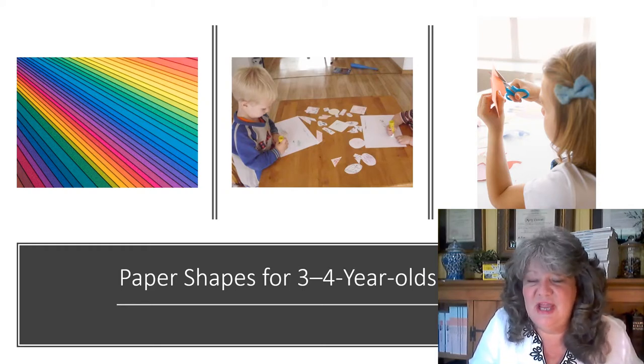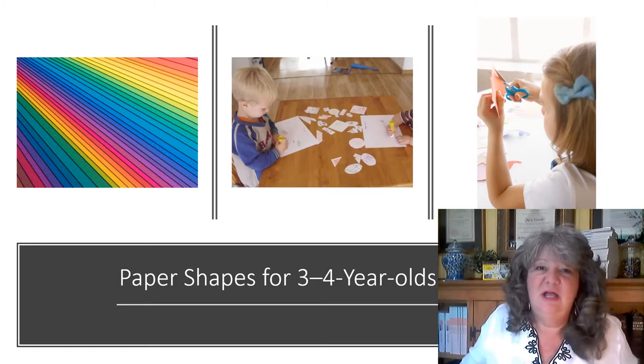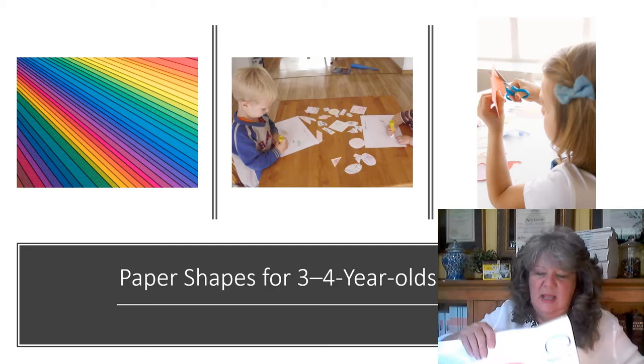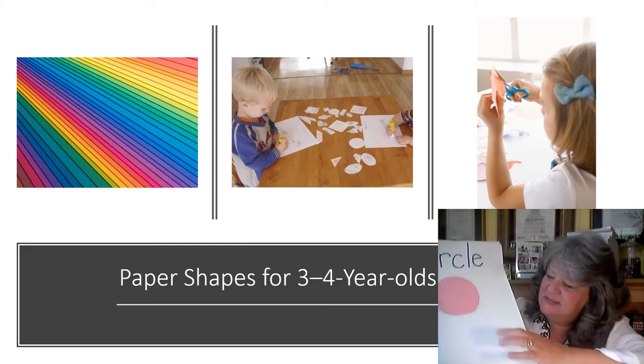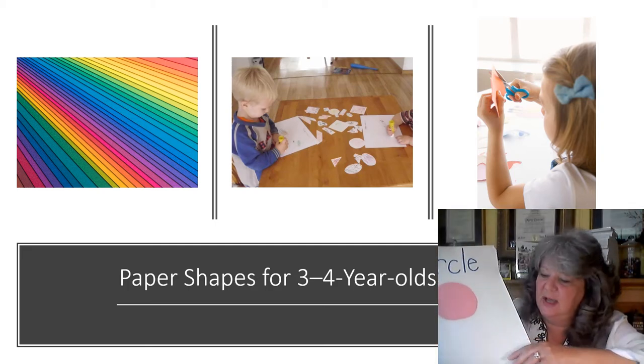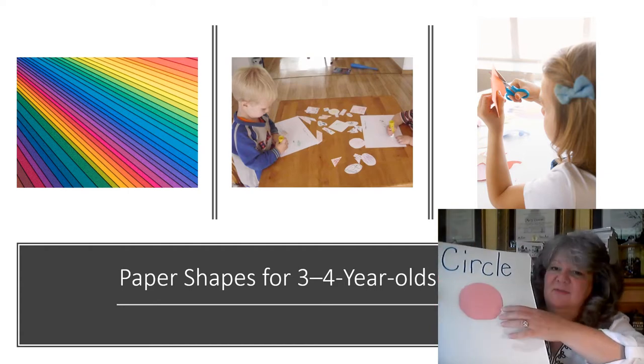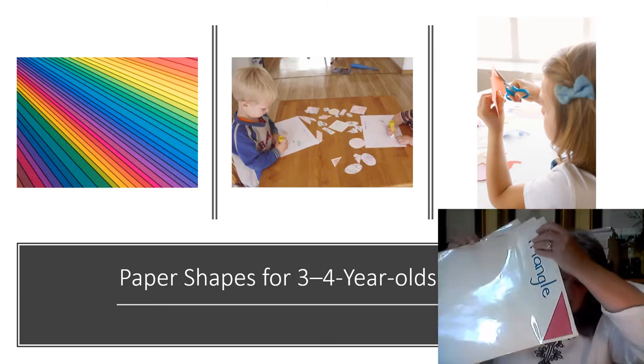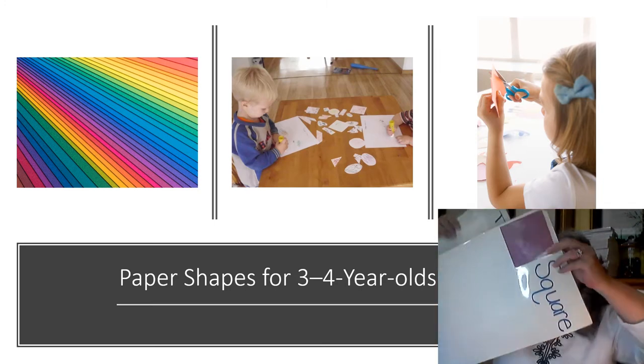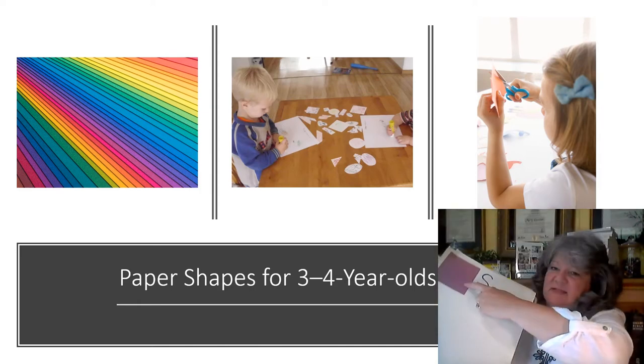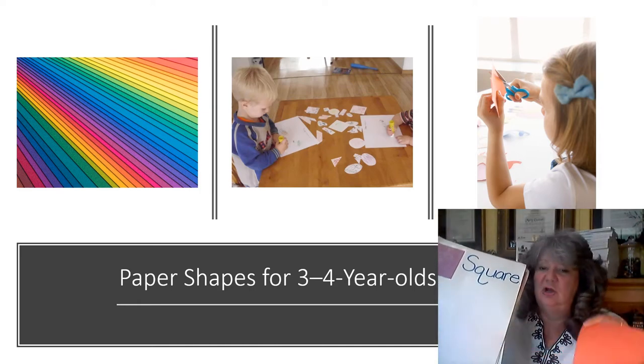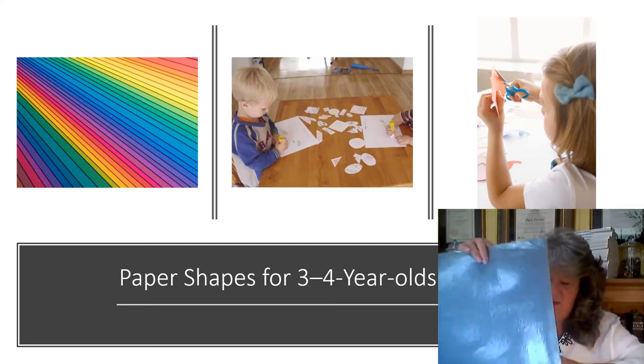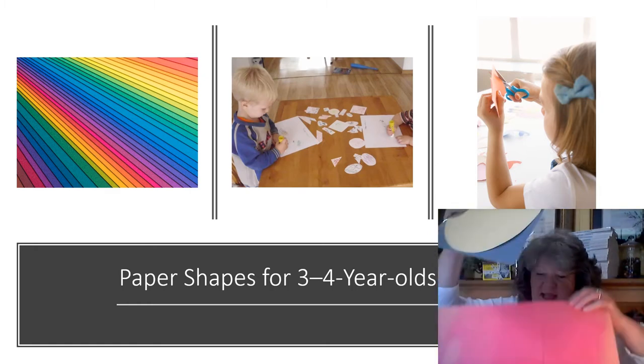All right I've got several shape games to share with you so I'll try to cover them quickly. To begin with I have a large piece of poster board I cut into half and I have an example of a circle, rectangle, triangle, and square. Notice that I have a sample in the top corner. Next I have a very large example of each of those. Again triangle, square, circle, and rectangle.